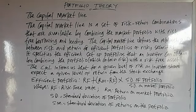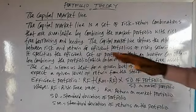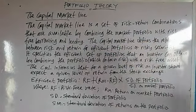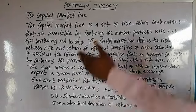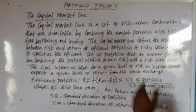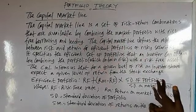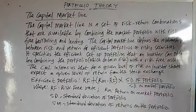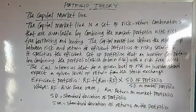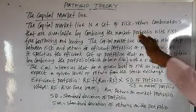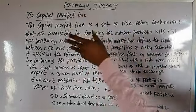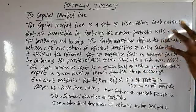The capital market line is a set of risk-return combinations. Definitely, for any set of investment, there will be risk and return attached to such investment. Basically, what we are considering in portfolio theory is risk and return.